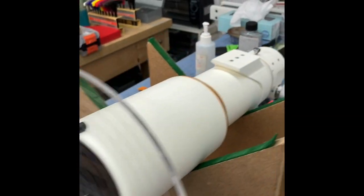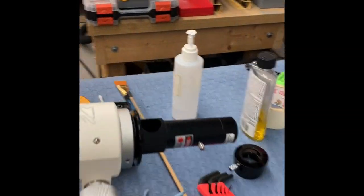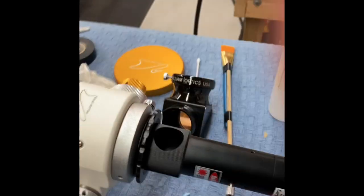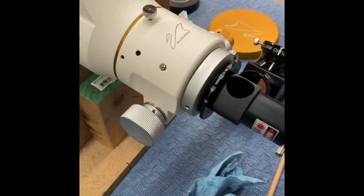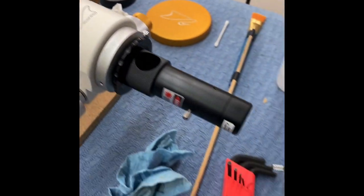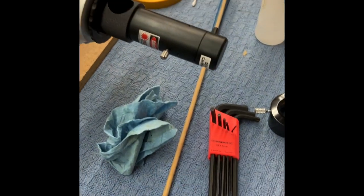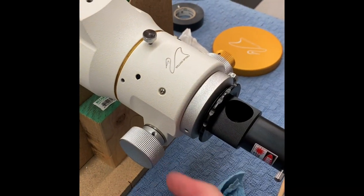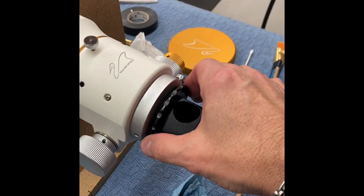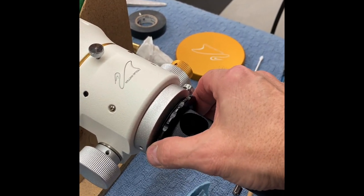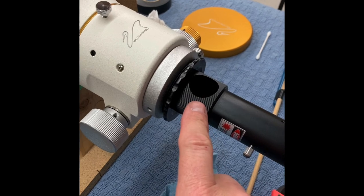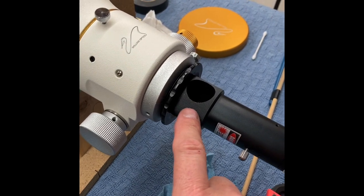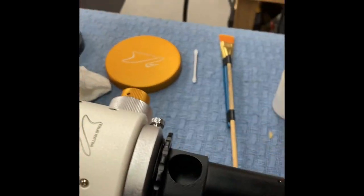Next thing I do is I come over here, and I use a couple different tools. In this case, I'm not using the diagonal. I take the diagonal right out, and I check the collimation right to the focuser.